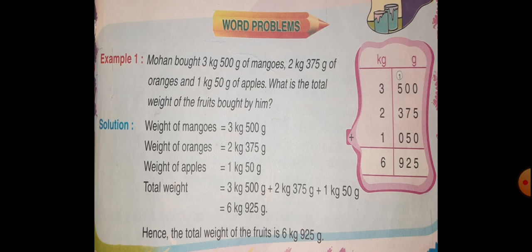To find the total weight of fruits, you will add all the quantities of fruits. So start writing statement, weight of mangoes 3 kg 500 g, weight of oranges 2 kg 375 g and weight of apple 1 kg 50 g. Now, arrange all the quantities in column and then add.